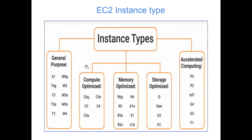The next category is Compute Optimized. If your workload is more on the computation side — for example, machine learning algorithms where you want to process data repeatedly for more accurate results, or big data processing where computation is heavy — you can go with a Compute Optimized instance type. All these start with 'C': C6, C5, C3, C4 are all Compute Optimized instances.